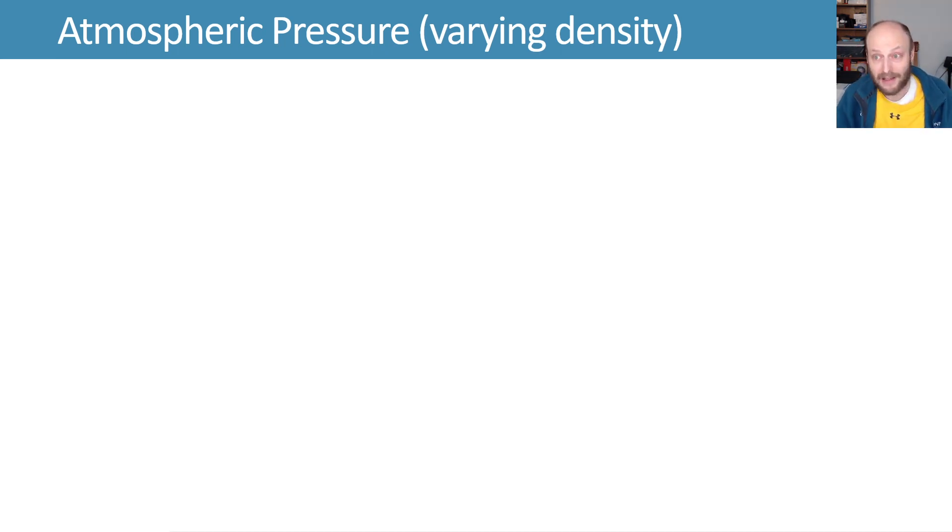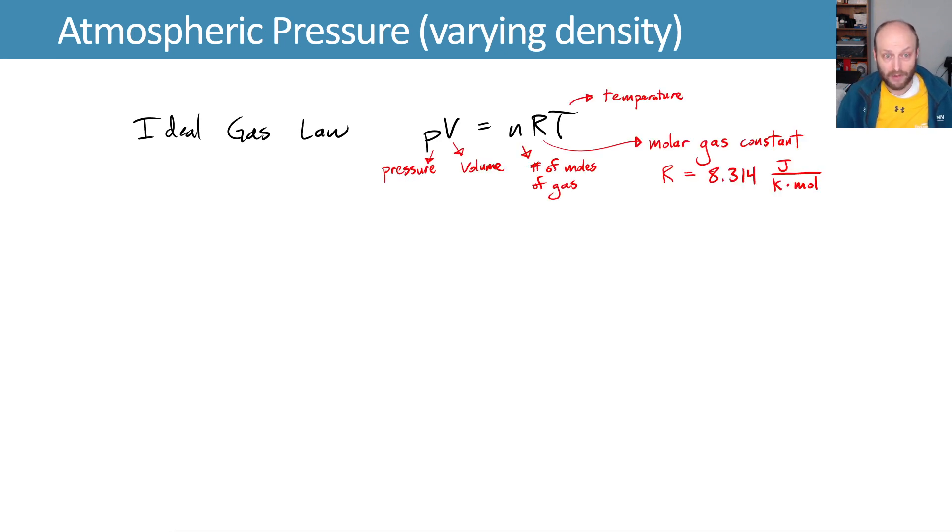What we will do is we will try using the ideal gas law, which is PV equals NRT. This says the pressure times the volume of gas is equal to the amount of moles of the gas times the molar gas constant times temperature.